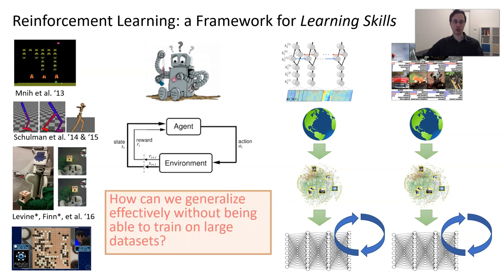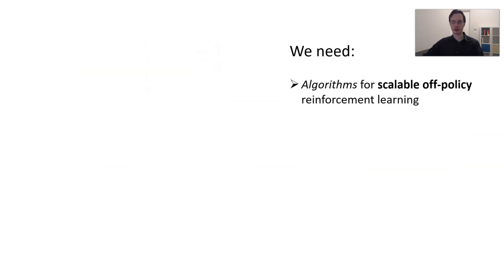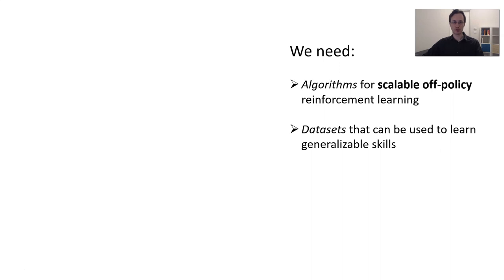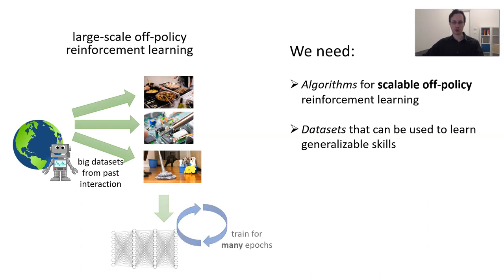A very important question we have to ask is: how can we generalize effectively without being able to train on large data sets? I think the answer is that we really can't. What we really need is a different way of thinking about robotic RL, where we have algorithms for scalable off-policy reinforcement learning and data sets that can be used to learn generalizable skills. This is fundamentally a multitask way to think about RL, where you have a machine that has collected a large data set of past experience, and that past experience will be used to train for many epochs to learn generalizable skills, and then occasionally go in and get a little bit more data if your particular skill demands it.